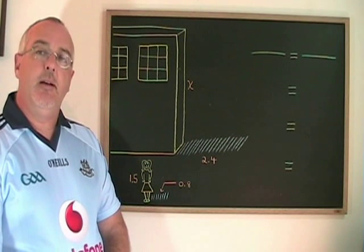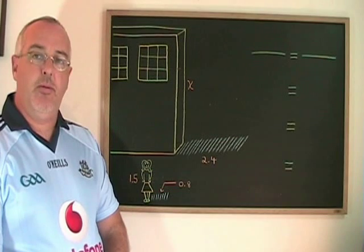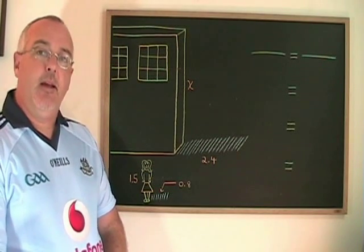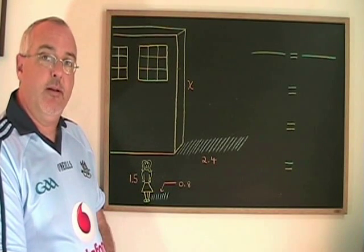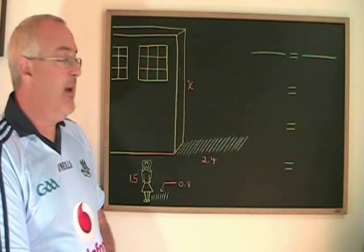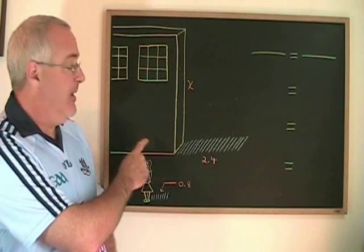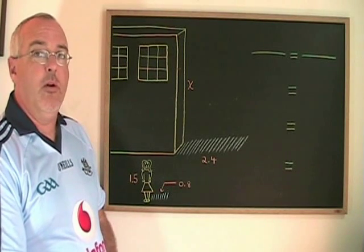In geometry sometimes we face problems that I like to call shadow problems. In this example, Maya is 1.5 meters tall and her shadow is 0.8 meters in length. The school Maya attends has a shadow that is 2.4 meters in length, but we don't know how tall it is.